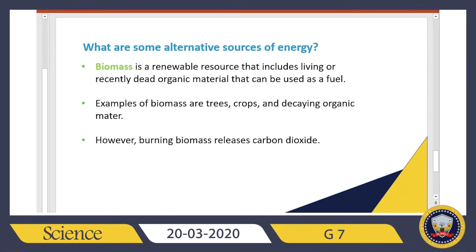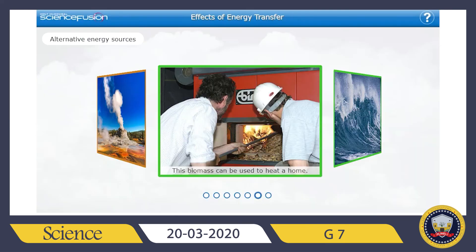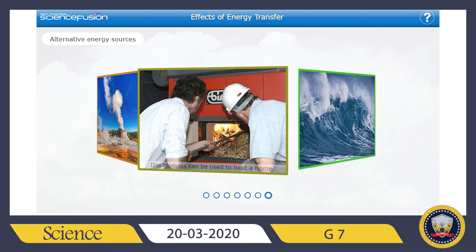Our next and last energy resource is biomass, which is also a renewable resource. It includes living or recently dead organic material that can be used as fuel — like trees, crops, or decaying organic matter. However, the problem is that biomass can produce carbon dioxide, which is a greenhouse gas and can pollute the atmosphere.